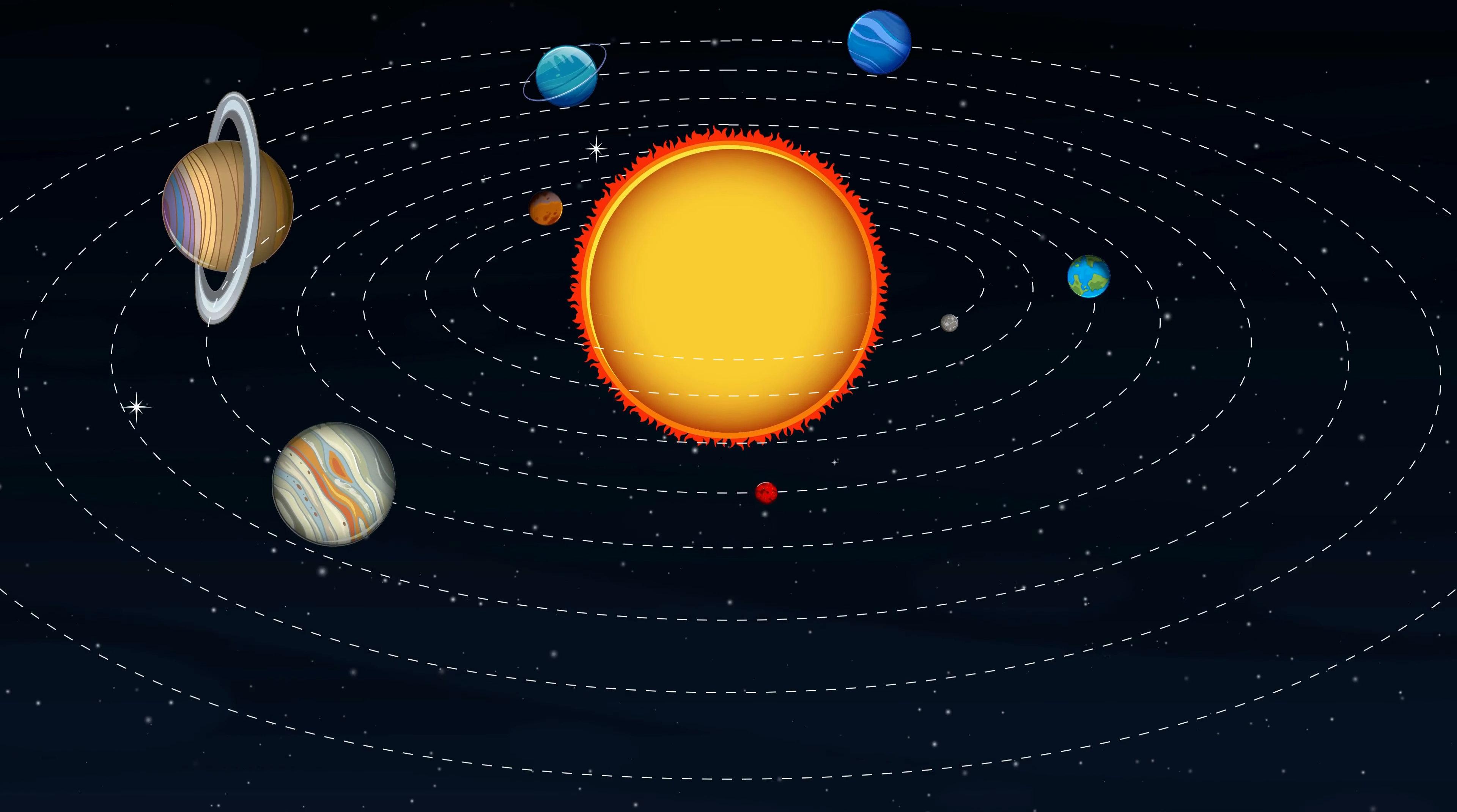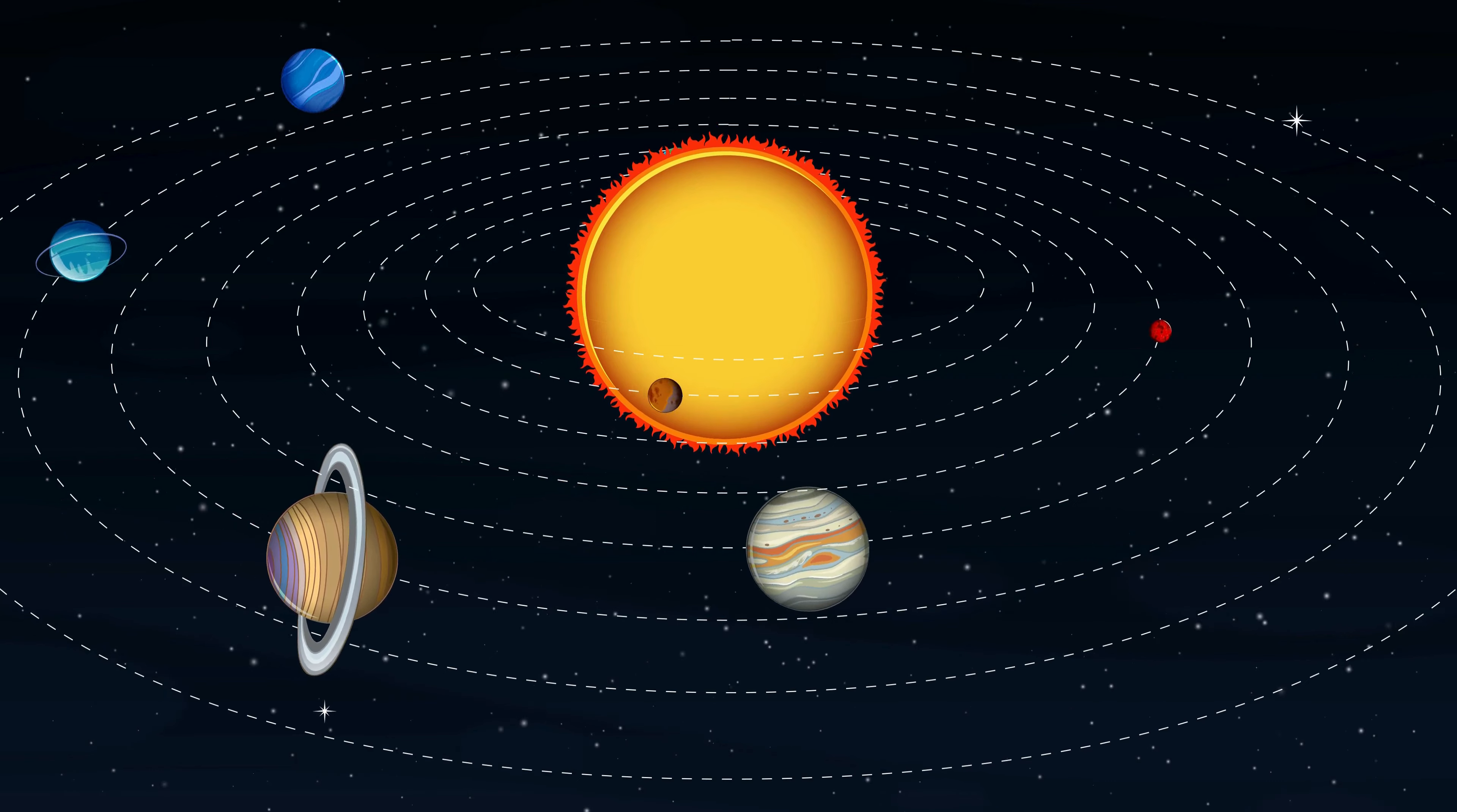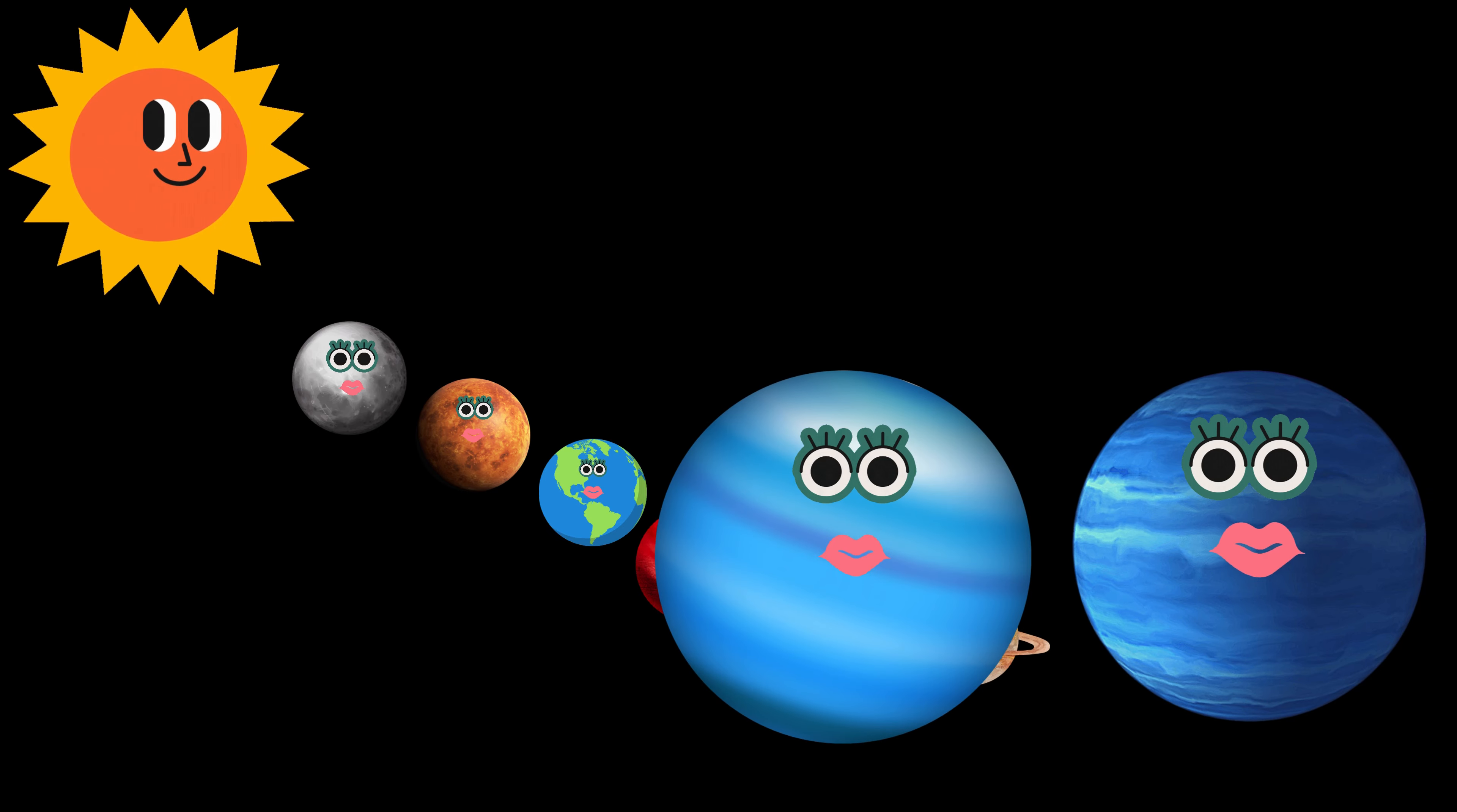Planets, planets round they go, in our solar system to and fro. Uranus and Neptune cold and blue, ice giants in the distant view.